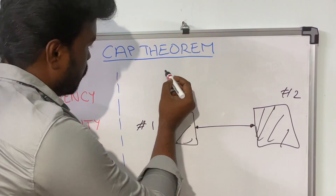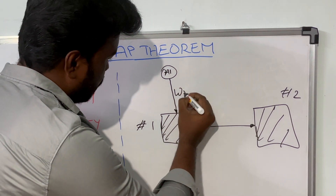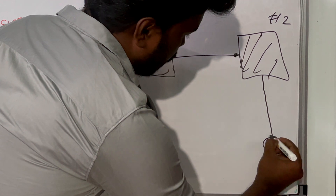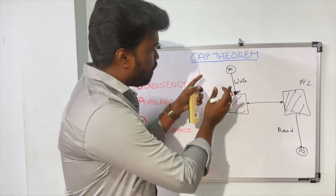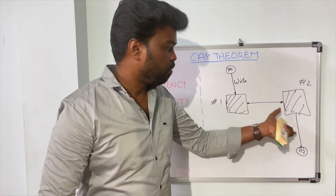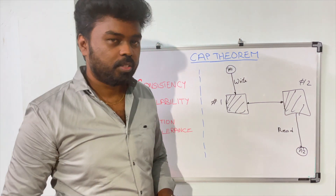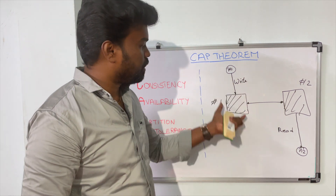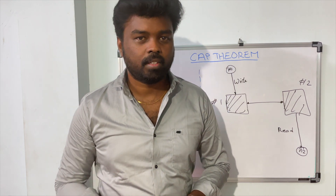Say if you have an application instance A1 which is trying to write some data to machine number one, and at the same time you have another application instance A2 which is trying to read some data from machine number two. Soon after instance A1 finishes writing the data to machine number one, immediately that data should be available for A2 when it is reading from machine number two. Which means we need to replicate the data from machine number one to machine number two in near real-time. As soon as the data gets written to node one, it should get replicated to node two so that application instance A2 should always get the latest data. That's what we call consistency.